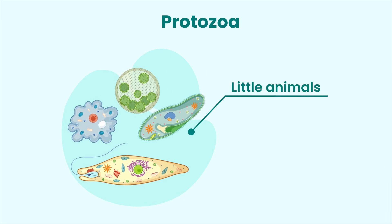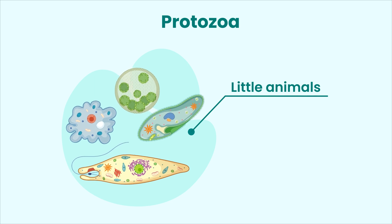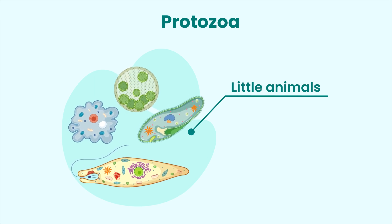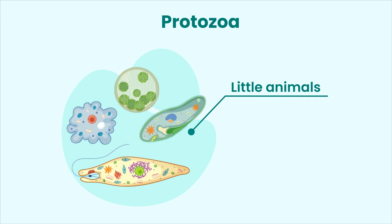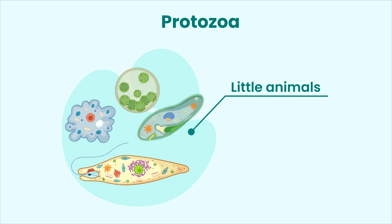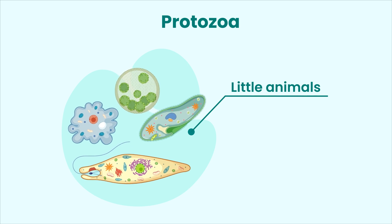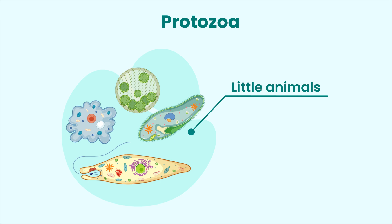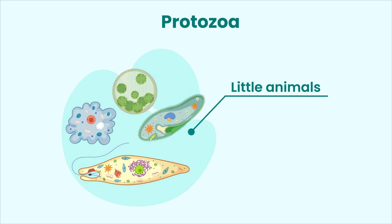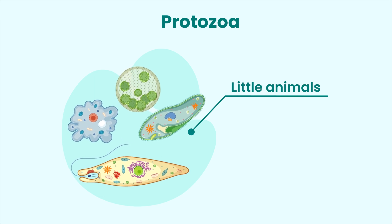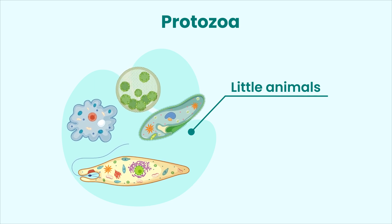Talking about protozoa. The word protozoa means little animals. This is because protozoa hunt and gather other microorganisms for food and hence act like tiny animals by showing a heterotrophic mode of nutrition. Protozoa mainly feed on bacteria, but they can also feed on other protozoa and some organic matter. Thus, this was all about the microbial world wherein fungi, algae, viruses, bacteria and protozoa live together.